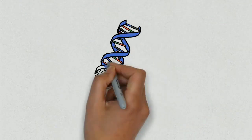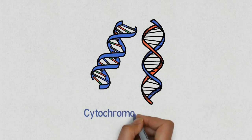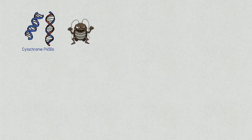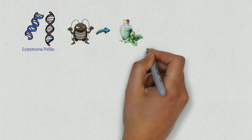These roaches have a group of genes called cytochrome P450s, which help them withstand poisonous chemicals like peppermint oil.